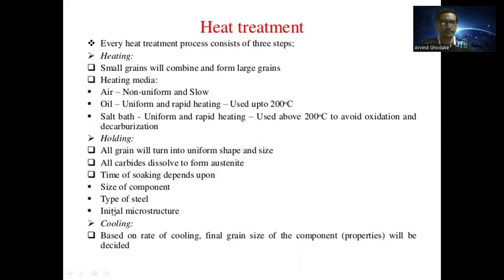The time of soaking depends upon the size of the component, type of steel, and initial microstructure. During holding, the metal is kept stable at that particular temperature so that it forms grains of uniform shape and size and all carbides get dissolved to form austenite.